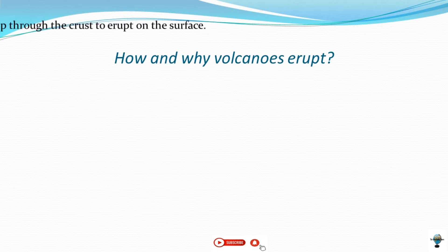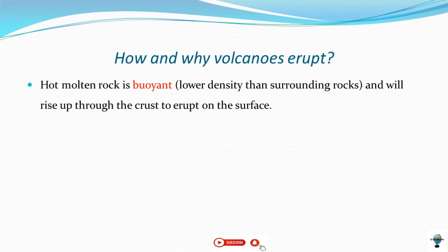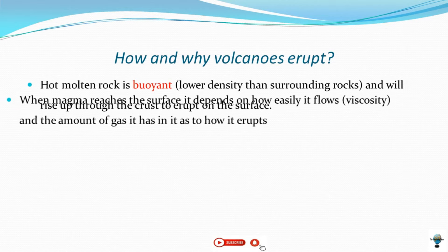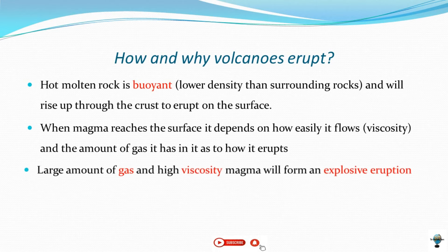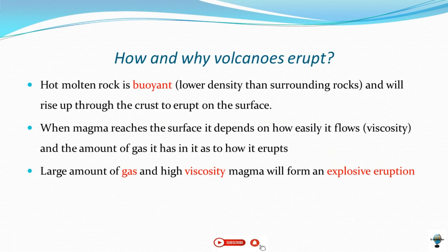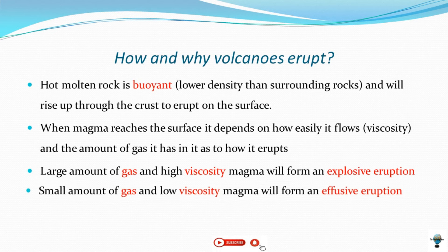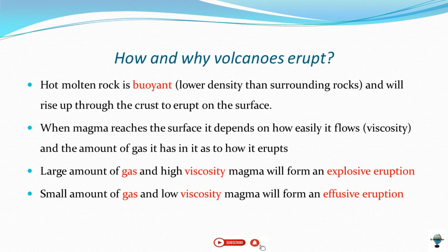Molten rock has a lower density and therefore it rises up through the crust to erupt on the surface. When magma reaches the surface, how it behaves depends on how easily it flows and the amount of gases it has. When there is a large amount of gases and high viscosity of magma, we experience explosive eruption. When there is a small amount of gases and low viscosity, we experience effusive eruption.